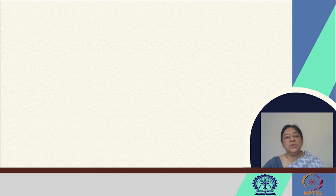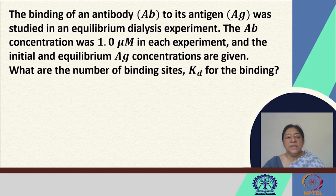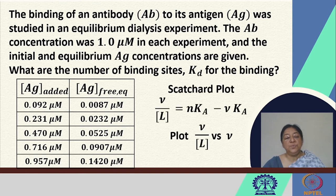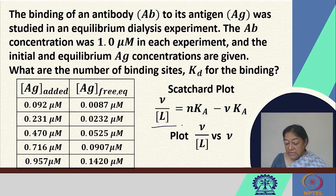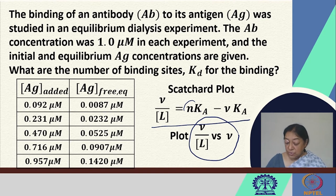In another example, we look at antigen-antibody binding, studied in an equilibrium dialysis experiment where antibody concentration is 1 micromolar. Initial and equilibrium antigen concentrations are given in a table. We want to determine how many binding sites are present and the dissociation constant Kd. To do this, we plot a Scatchard plot — ν/L versus ν — where the slope equals −Ka and the x-intercept gives the number of binding sites.